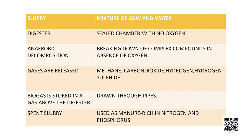Students, it's time for a quick recap. Slurry: mixture of cow dung and water. Digester: sealed chamber with no oxygen. Anaerobic decomposition: breaking down of complex compounds in the absence of oxygen. Biogas: a mixture of methane, hydrogen, hydrogen sulfide, and carbon dioxide — stored above the digester and drawn through pipes. Spent slurry is used as manure because it is rich in nitrogen and phosphorus.